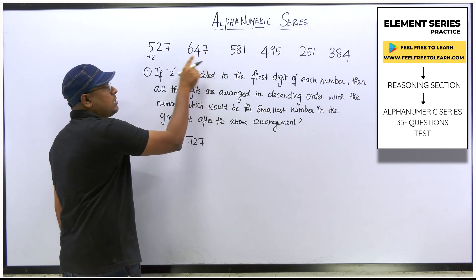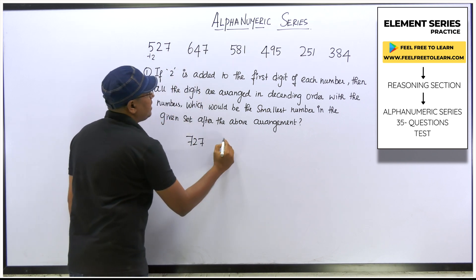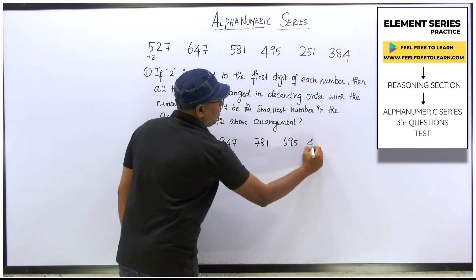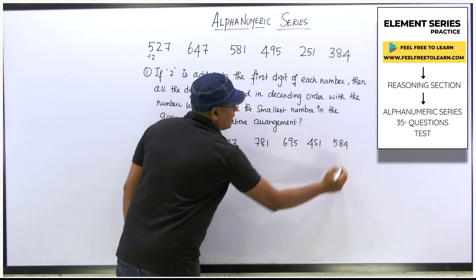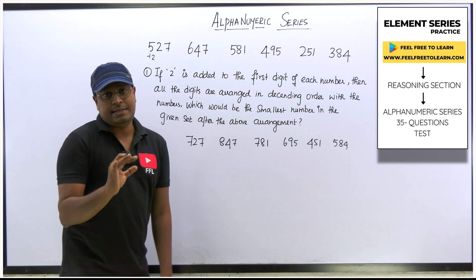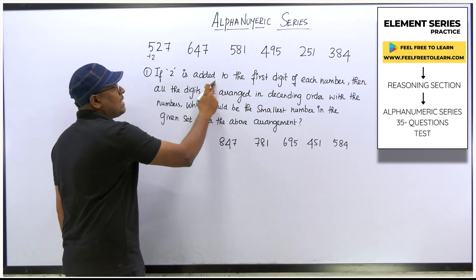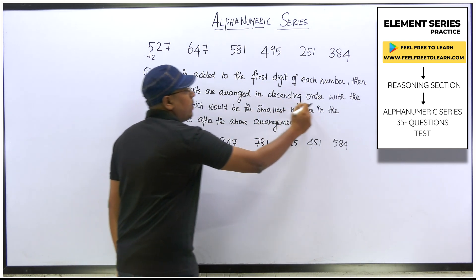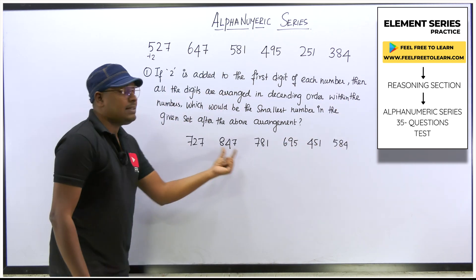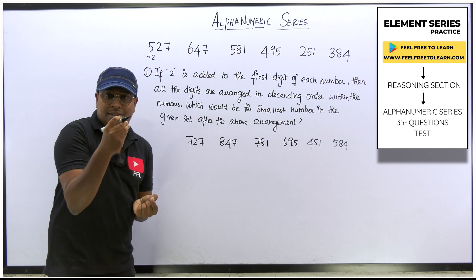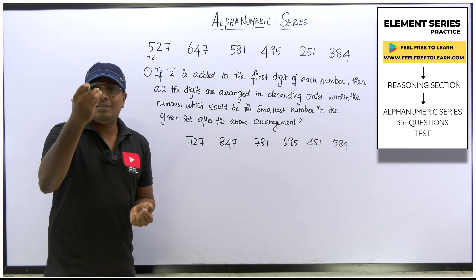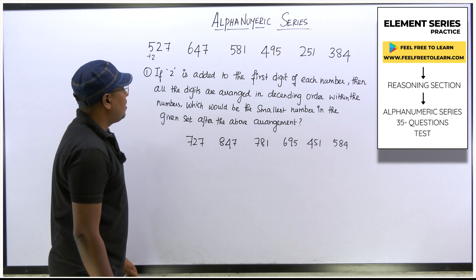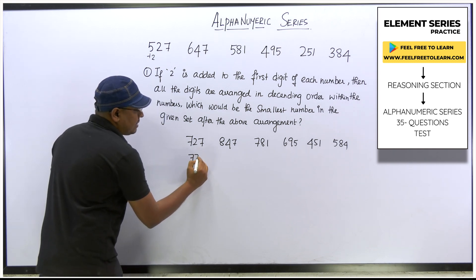Similarly, for 647, add 2 to the first digit 6, giving 847. For 781, add 2 to get 981. For 695, add 2 to get 895. For 451, add 2 to get 651. For 584, add 2 to get 784. So we have added 2 to the first digit of each set. The next step is to arrange each set in descending order — largest to smallest.